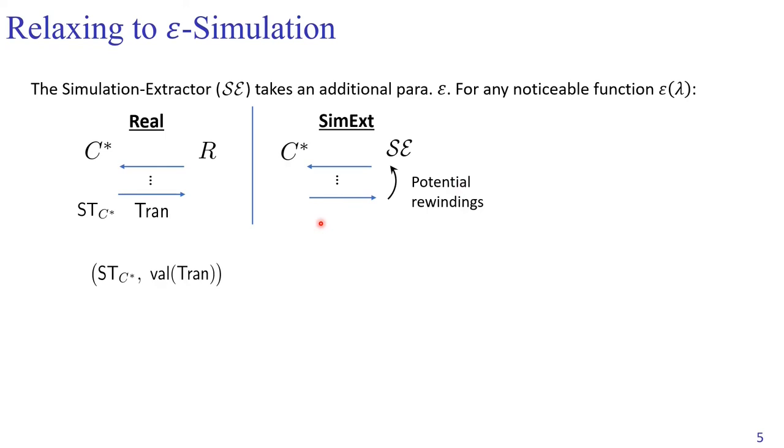The second world is the simulation extraction world. This SE talks to C star and can potentially rewind C star. At the end of the interaction, the SE outputs a tuple, which is supposed to be the simulated post-extraction state, and the message committed by C star. We say that an extractable commitment is epsilon-simulatable if these two tuples are epsilon-closed for any noticeable function epsilon.